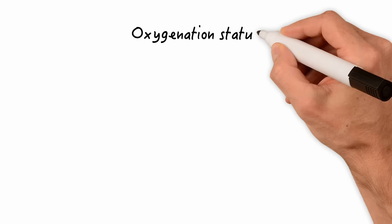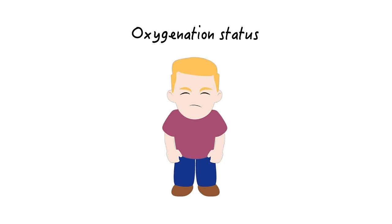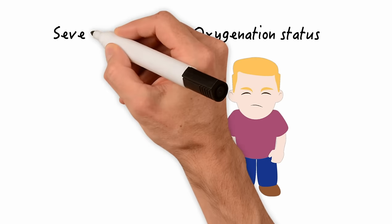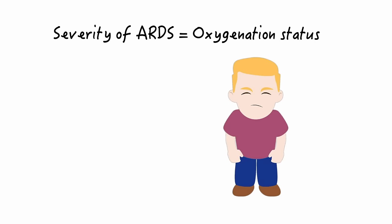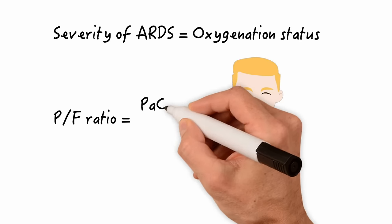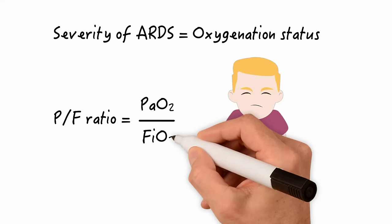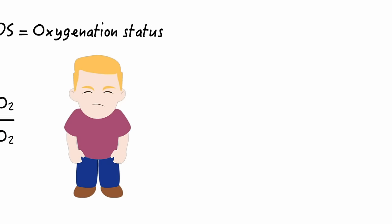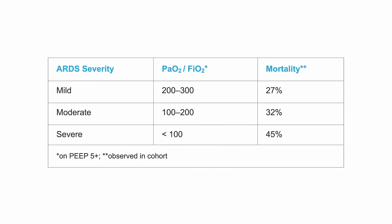The oxygenation status of the patient is also one of the ways in which we classify the severity of ARDS. To determine the oxygenation status, the clinician should perform the PF ratio, which is simply the PaO2 divided by the FiO2 of the patient. Here you can see the classification of the severity of ARDS, as well as the mortality risk.